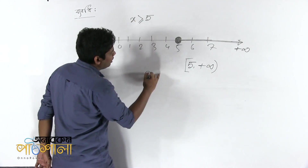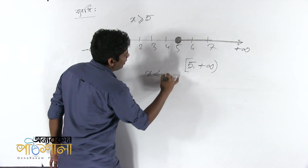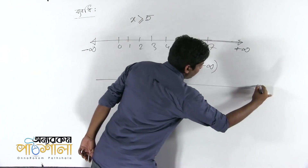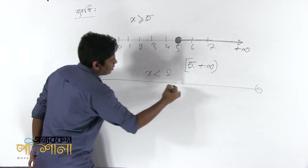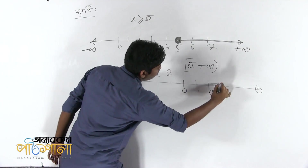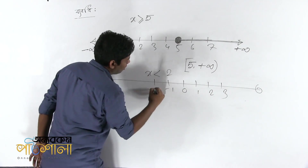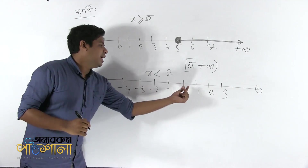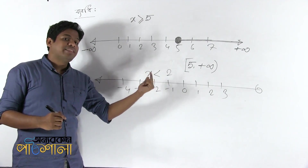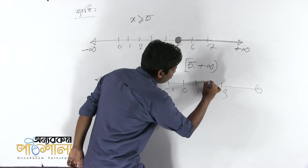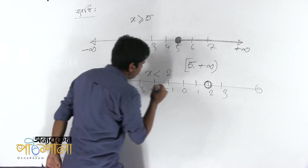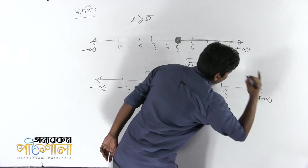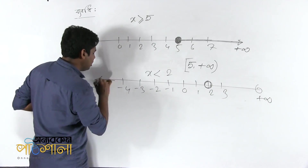x is less than 2. After this, there is 0, 1, 2, 3, minus 1, minus 2, minus 3, minus 4. We are going to tell you that x is more than x. First of all, the 2 is here.